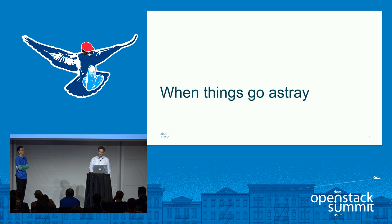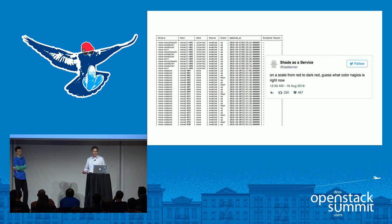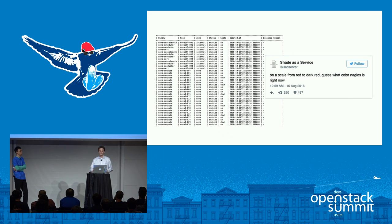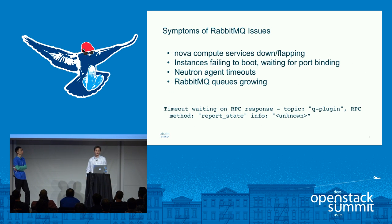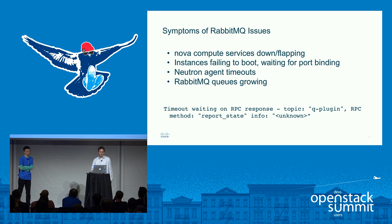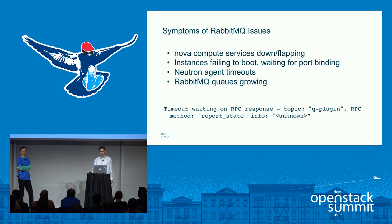When things go wrong and you start running into scale issues with Rabbit, the first thing you'll probably start noticing is your compute services start flapping up and down. Instances may fail to boot, you'll be waiting for port binding, the Neutron agents may start timing out, and you'll start seeing errors — timeout waiting on an RPC response. If you start checking the RabbitMQ queues, you'll start noticing that messages are backing up. This is never a good sign.